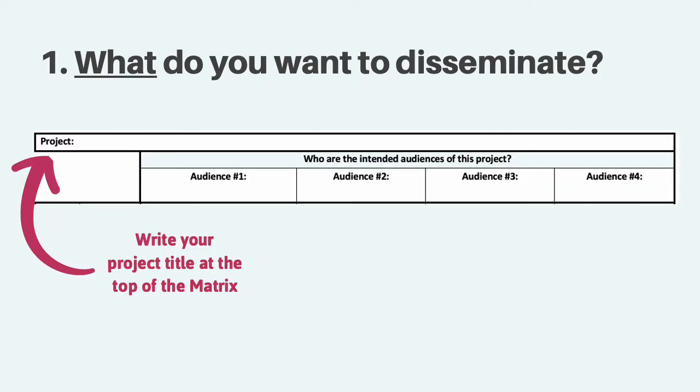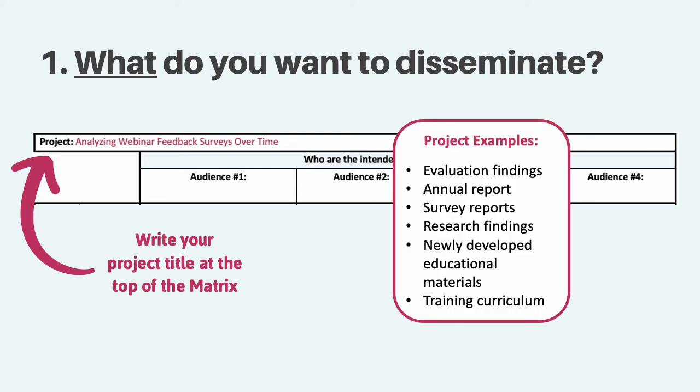Okay, so let's go ahead and get started. To begin, I'm going to direct you to the top of your matrix, where you'll see the word initiative. First, identify the initiative or the project that you would like to focus on. Think of an initiative or project activity with products or implications that others might find useful. This could be a research endeavor, an evaluation report, or a product created by your larger project. In the example I provided, I'm going to write down analyzing feedback surveys over time. Examples in your own work could include an educational curriculum that you've developed or findings from a research study. Maybe you developed an innovative instructional method or useful materials that others could use. If you need a minute, I encourage you to pause this video and write your initiative title at the top of the matrix.